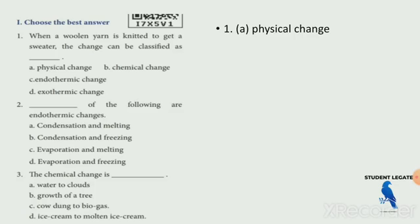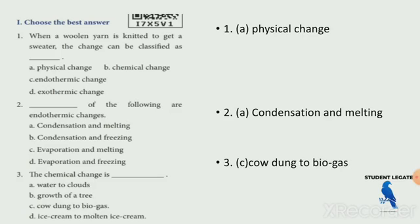Which of the following are endothermic changes? Condensation and melting. Here is the chemical changes question — clouds forming or physical changes. Option C is correct: cowdung to biogas — these are chemical changes.